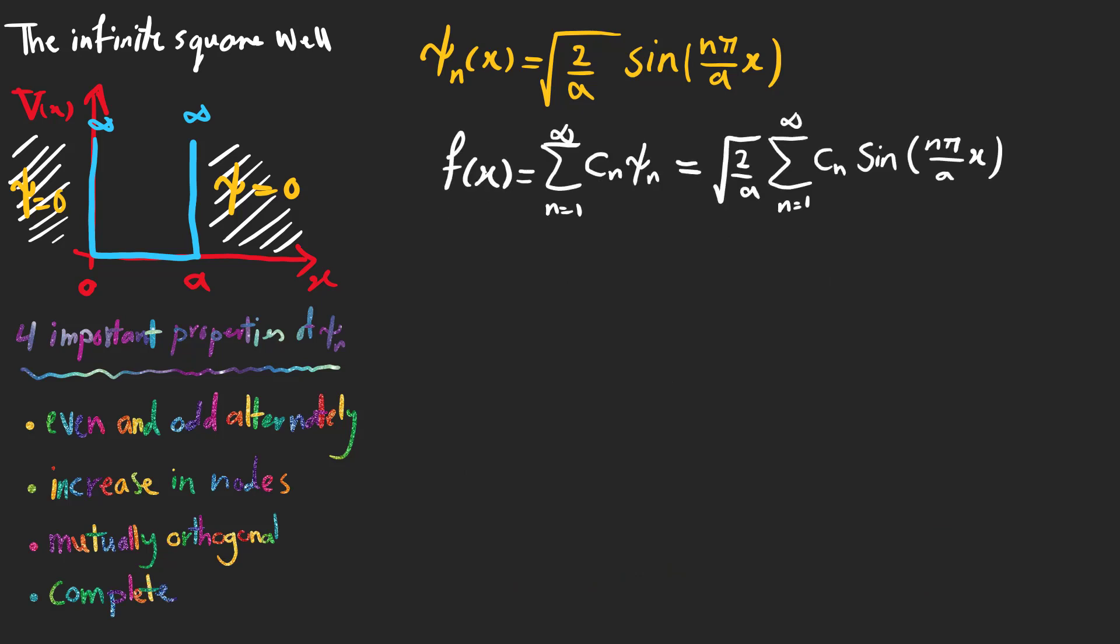The last property is their completeness and we can express any other function as a linear combination of them. It's the Fourier series based on which we can write a function f(x) using an infinite series of sines and cosines.